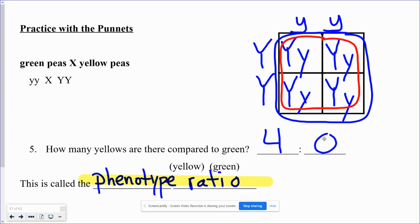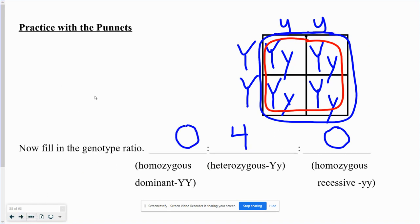Let's take a look at genotype ratio. So for this same cross, the genotype ratio looks at the actual combination of alleles, and there are three different types of genotypes that we've learned.